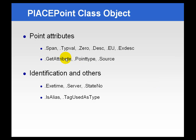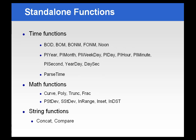You can get various point attributes using the PI ACE point class object, as well as some identifying metrics like execution time and server name.